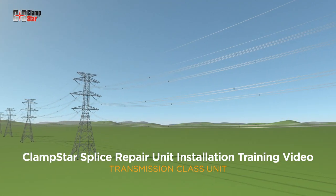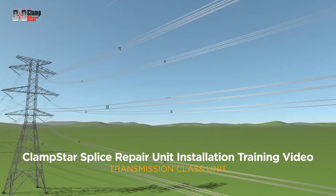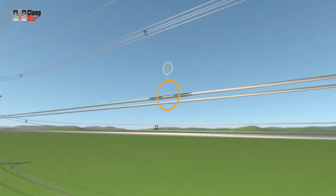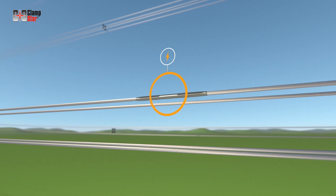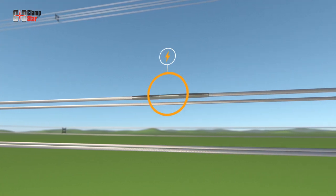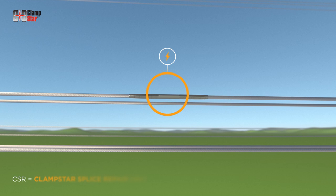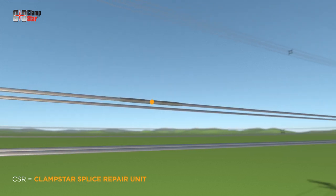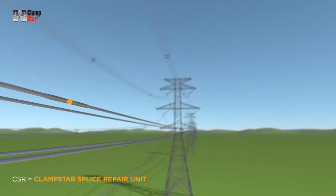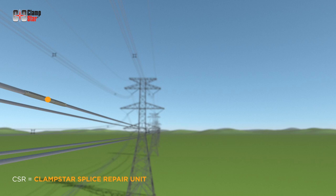ClamStar Splice Repair Unit Installation Training Video, Transmission Class Unit. For inline splices, ClamStars will provide full-tension restoration and 250 degrees Celsius system uprating, allowing aged portions of infrastructure to be safely operated at temperatures well beyond their original design parameters.